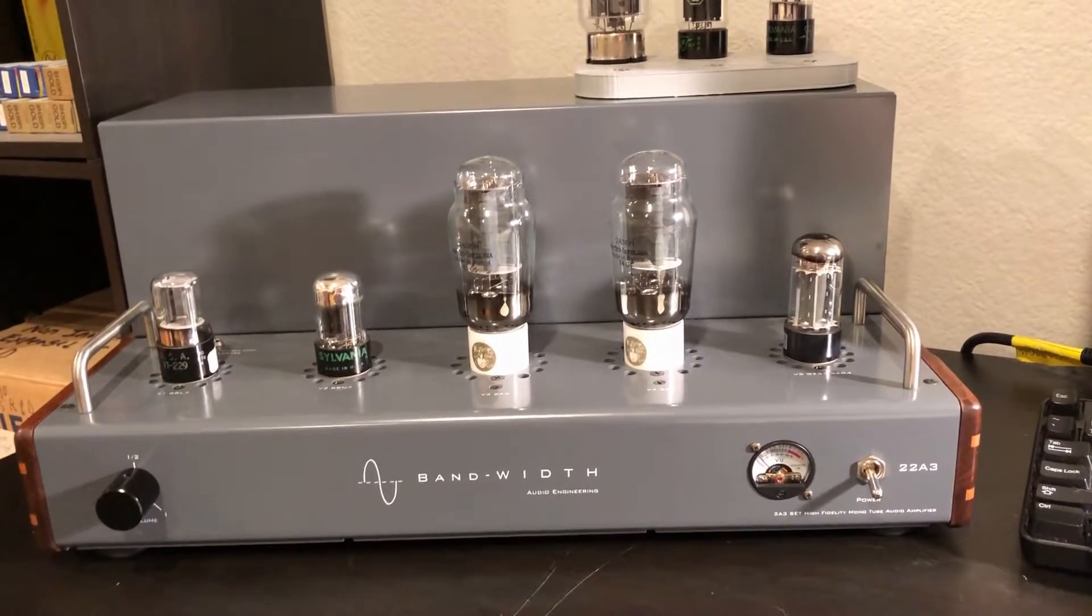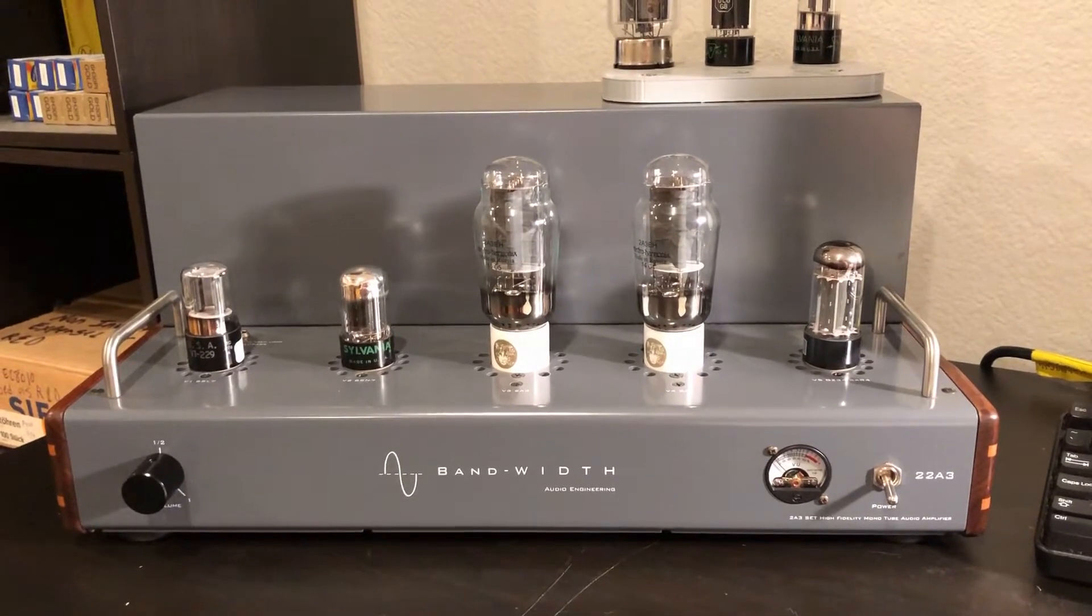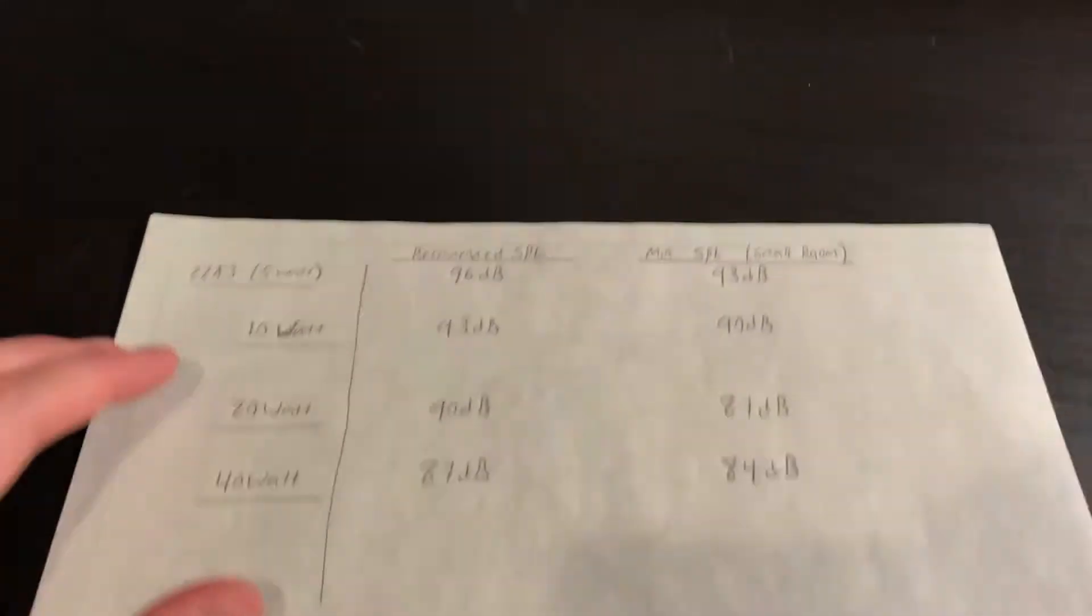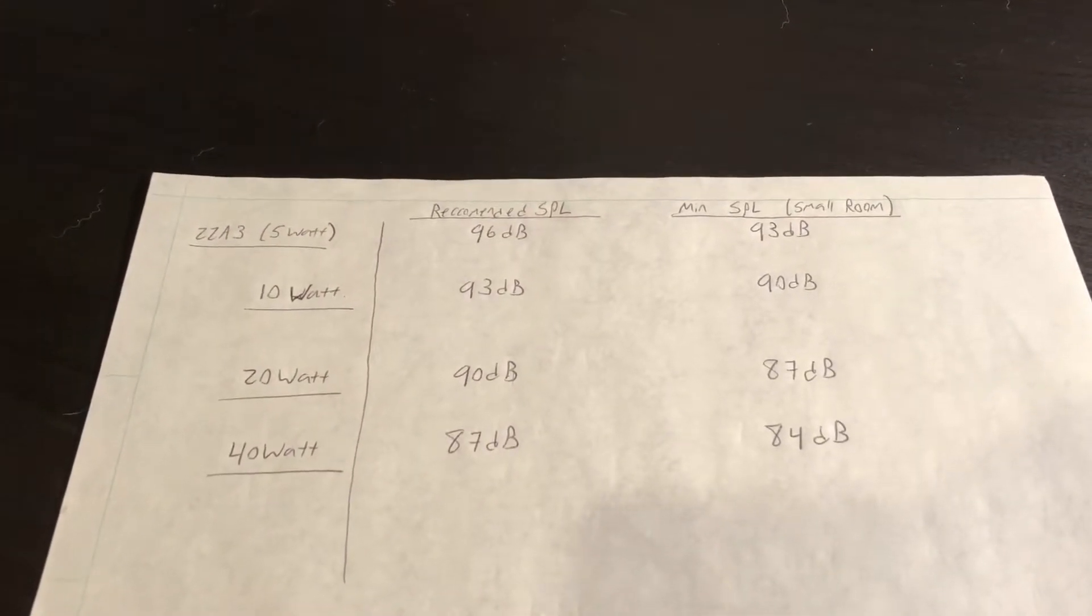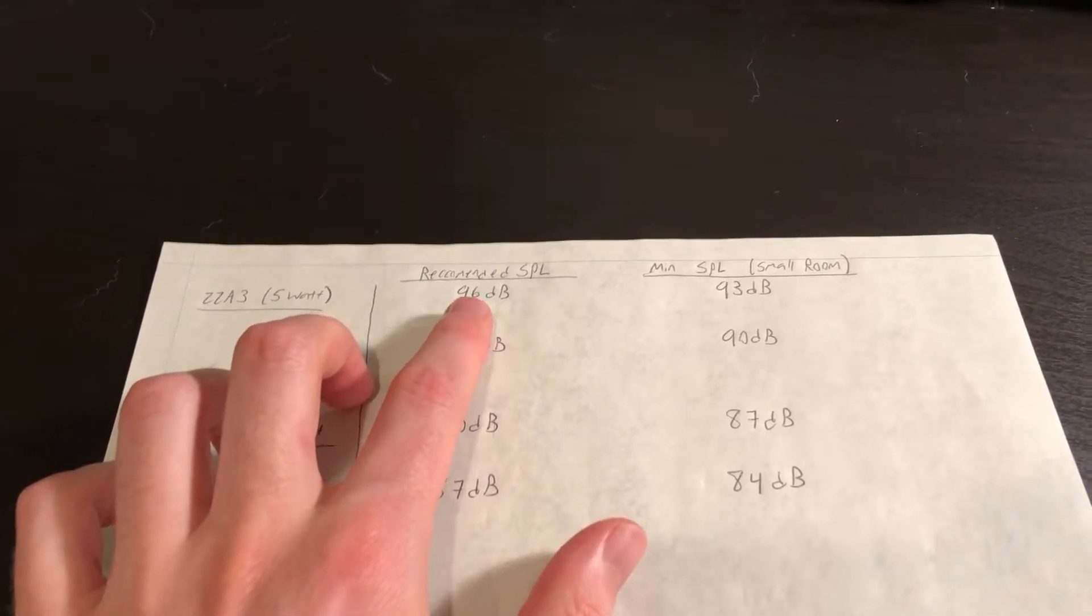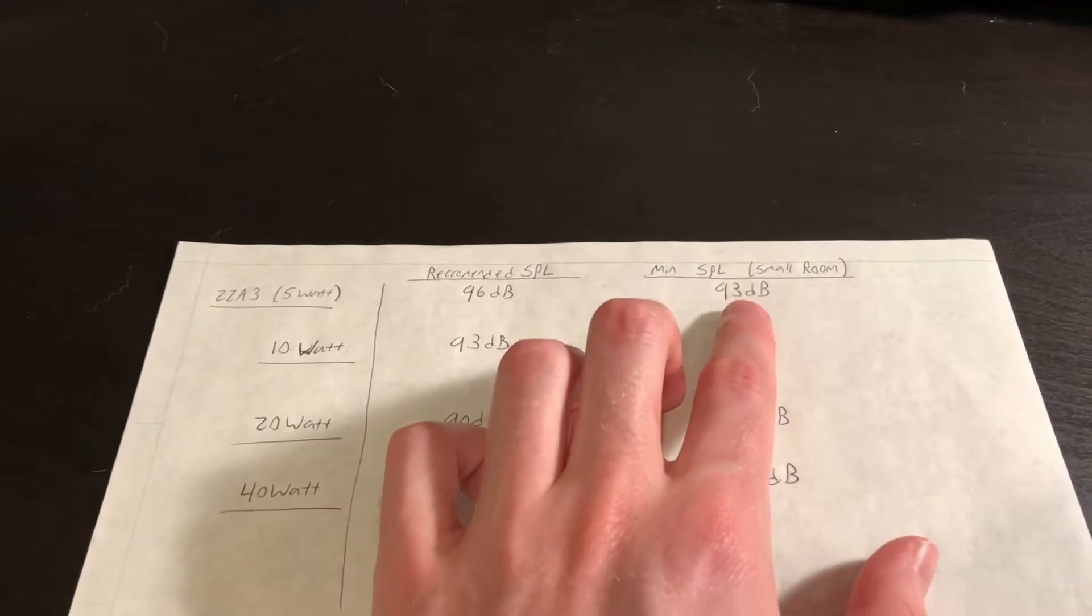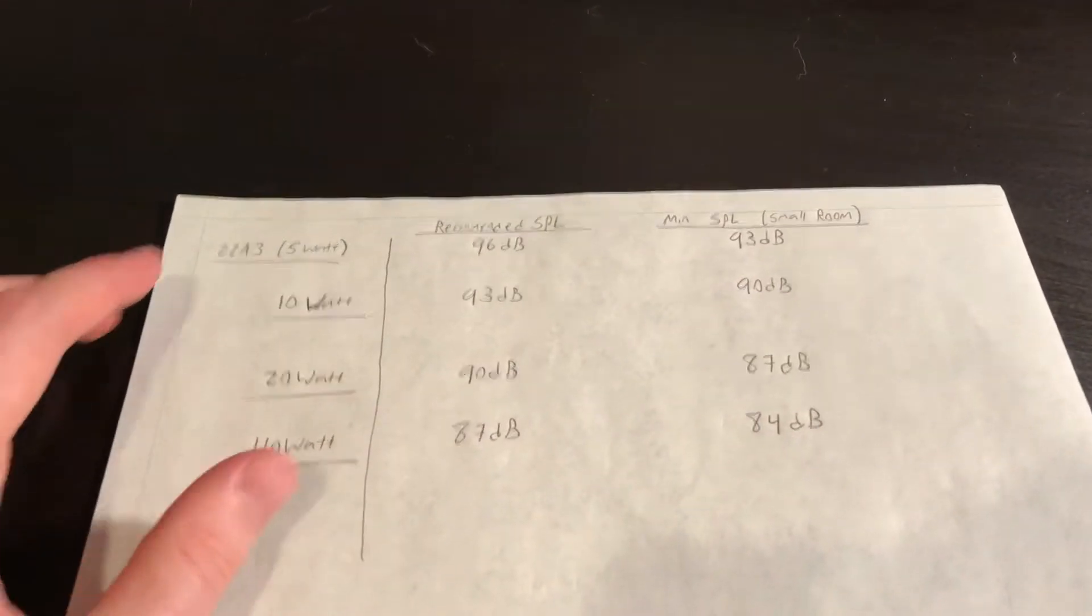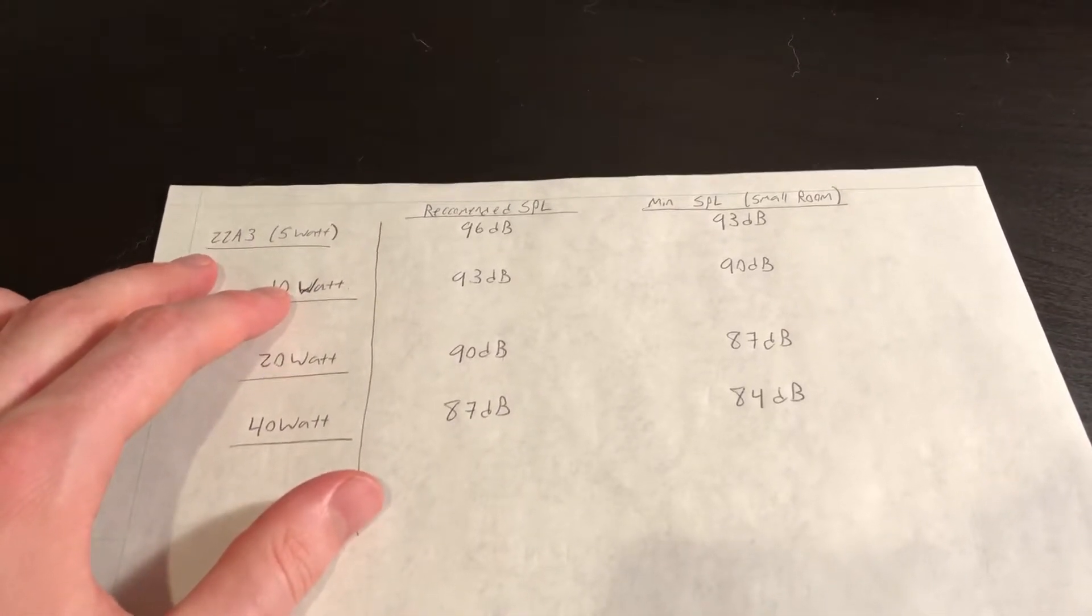Project 2845, the goal of that is to use a similar approach but using 845 triodes for hopefully around 40 watts of output power. With our 22A3 mono amplifier, 5 watt amplifier, we normally suggest a 96 dB SPL speaker for most rooms. If you're in a smaller room and don't necessarily need to play at really high SPLs or sound levels, 93 dB is probably the minimum recommended speaker efficiency for a small room.